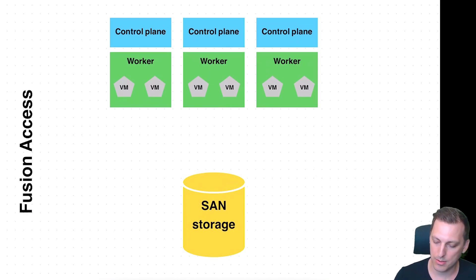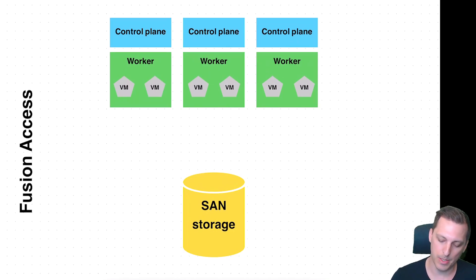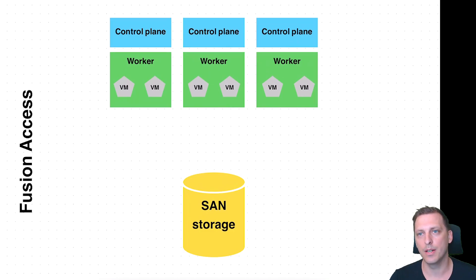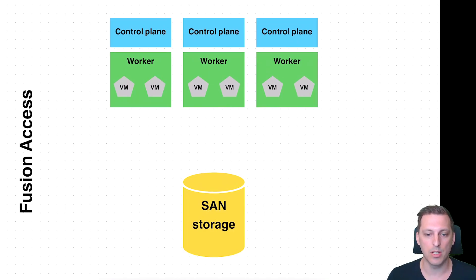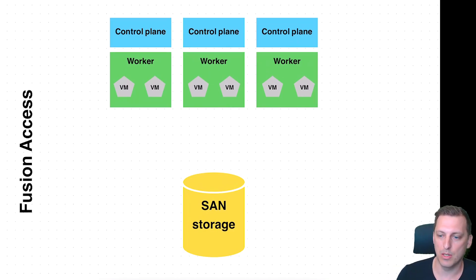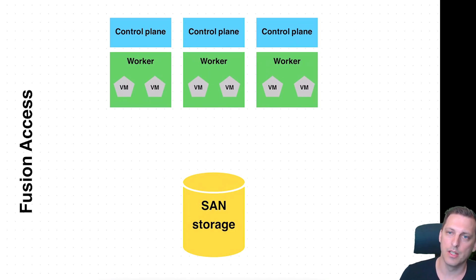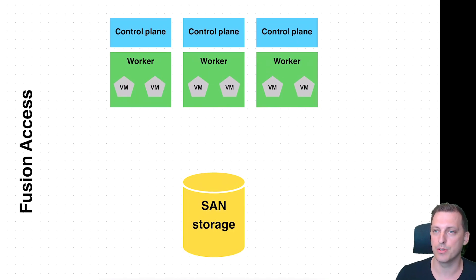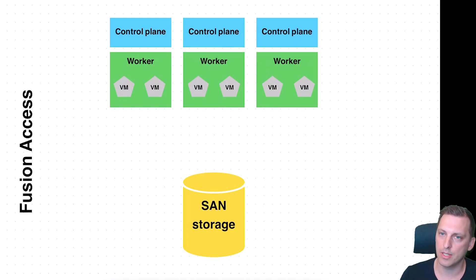The thing is, since this is a migration, we already have hardware around. So we have our SAN storage. It works perfectly well. We don't want to replace it — we don't even have the option to replace it because it's not being depreciated yet. So we have to find a solution to make that work in OpenShift virtualization.